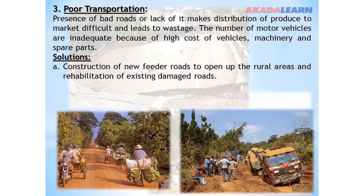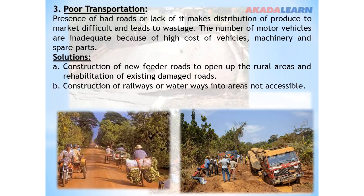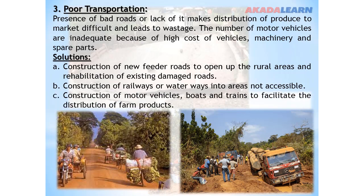Solutions to this problem: Construction of new feeder roads to open up rural areas and rehabilitation of existing damaged roads. Construction of railways or waterways into areas not accessible. Construction and provision of motor vehicles, boats, and trains to facilitate the distribution of farm produce.